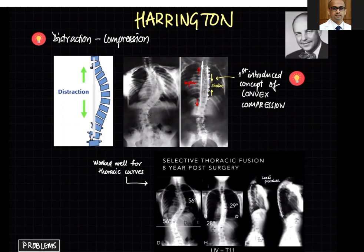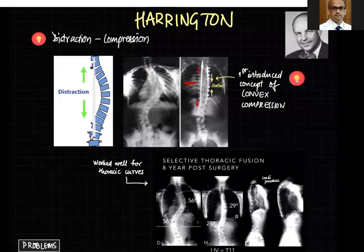Let's start with the first instrumentation designed by Paul Harrington. This was an instrumentation used to distract the ends of the curve with a rod known as the Harrington rod — it worked on the distraction principle. He also introduced the concept of convex side compression to reduce the curvature on the convexity, proposing both the concave distraction manoeuvre and the convex compression manoeuvre.